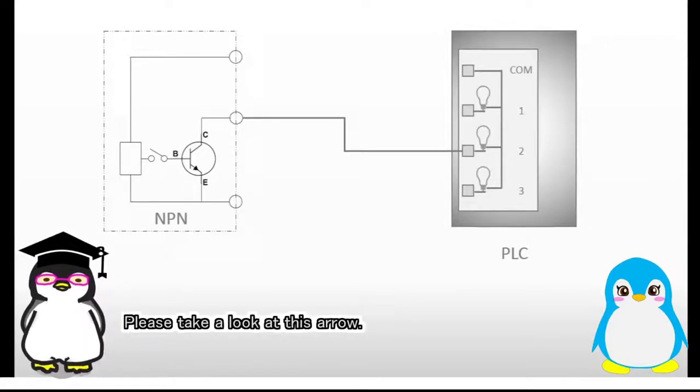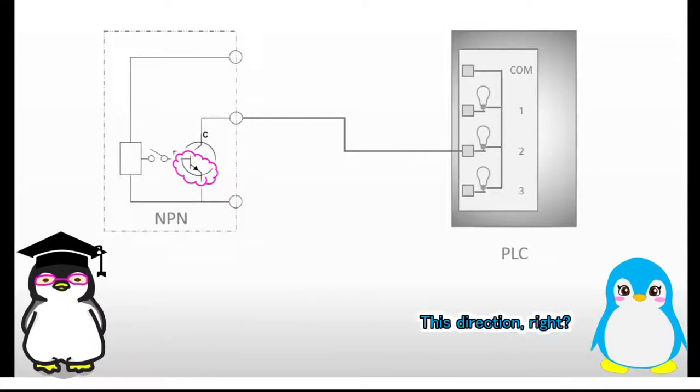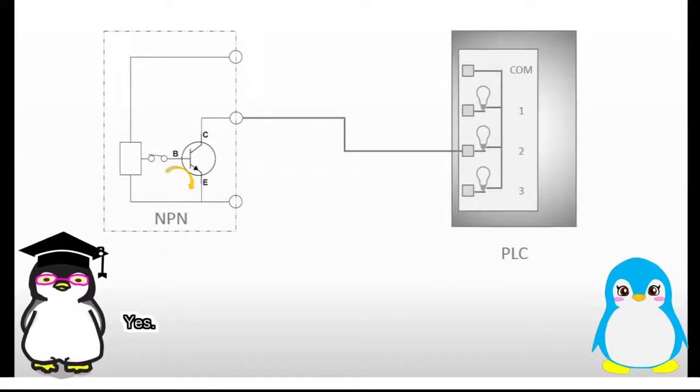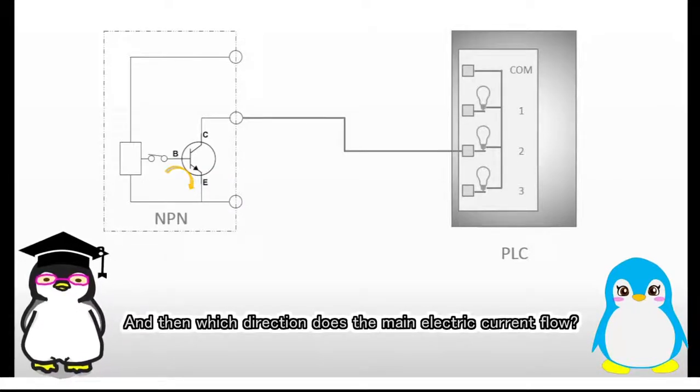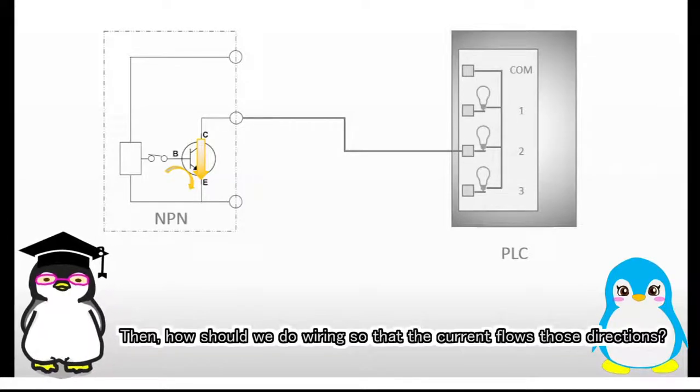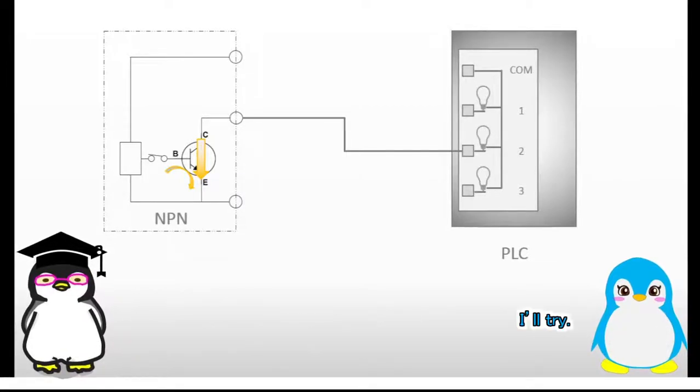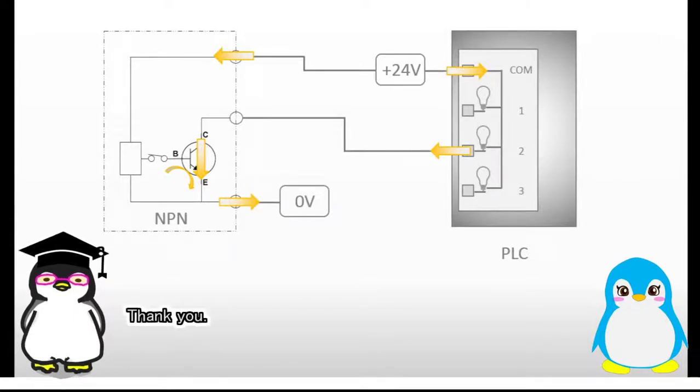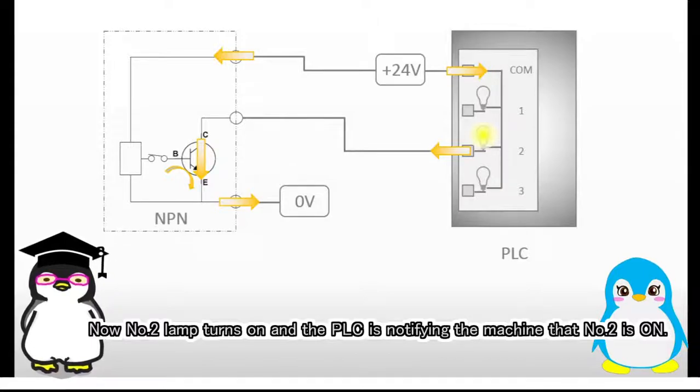Please take a look at this arrow. Which direction should the current flow? This direction, right? Yes. And then which direction does the main electric current flow? It is this direction. Right. Then how should we do wiring so that the current flows those directions? I'll try. Thank you. Now number 2 lamp turns on and the PLC is notifying the machine that number 2 is on.